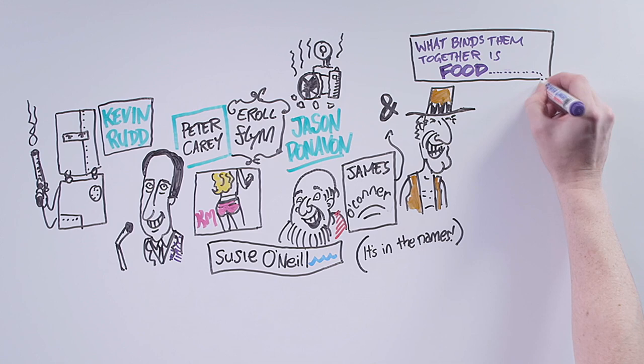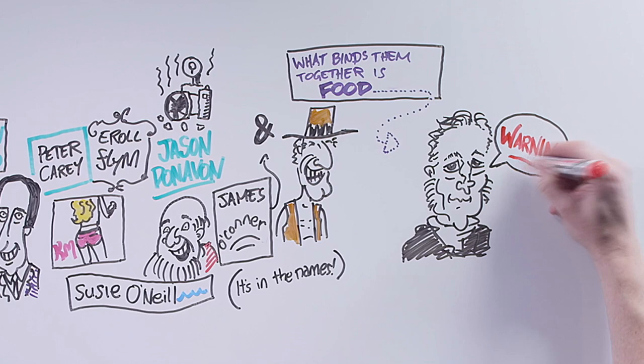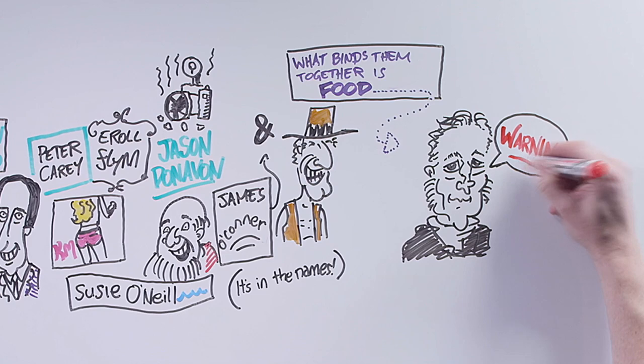The hint is in their names. What binds them together is food, or rather the lack of it. These Irish Australians are the result of a terrifying Malthusian warning to the world, the Great Irish Famine.